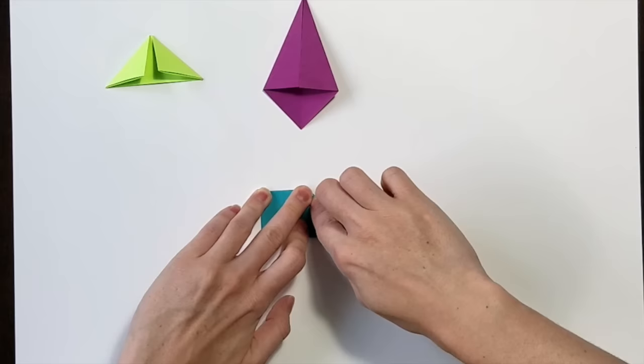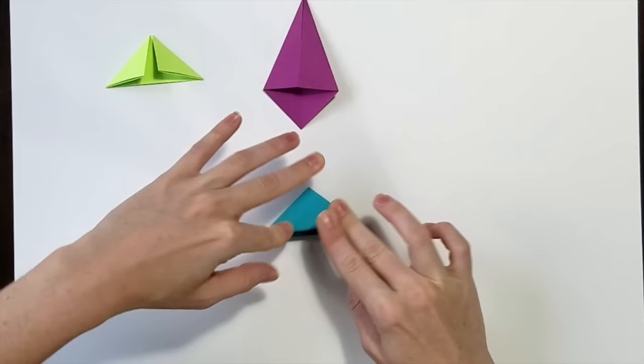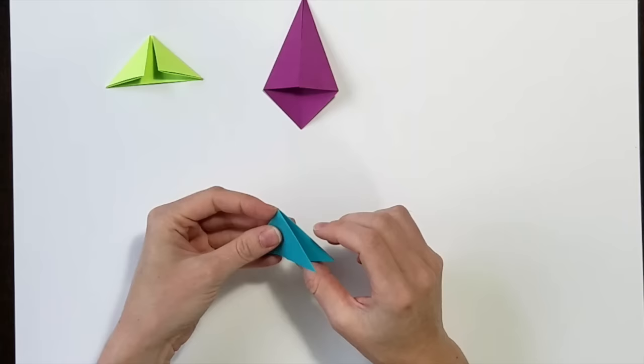Taking this side, pushing it all the way in and then folding down. So from above looks like this. From below looks like that. All I did was I took these corners and just pushed them in.